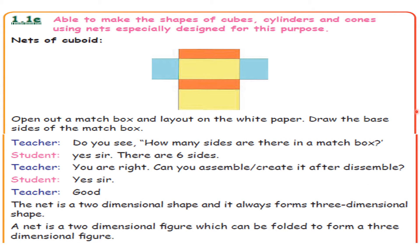This is the way we have to fold along the line. If you fold and paste it, it will become a cuboid. For example, take a matchbox. Open out a matchbox and lay it out on white paper. Draw the base sides of the matchbox. The teacher asked: do you see how many sides are there in a matchbox? The student replied: yes sir, there are 6 sides.